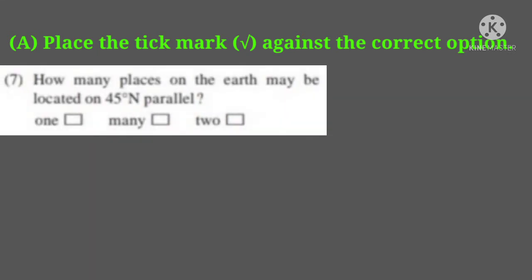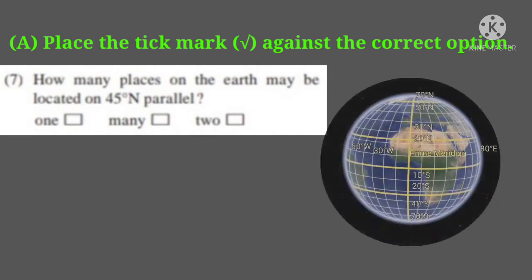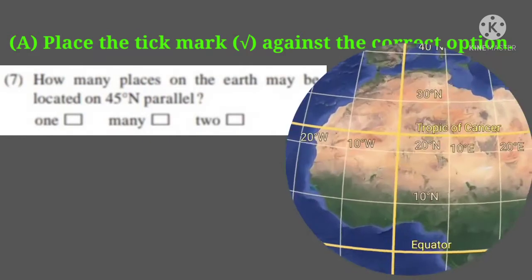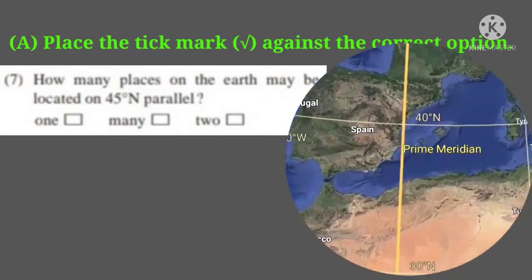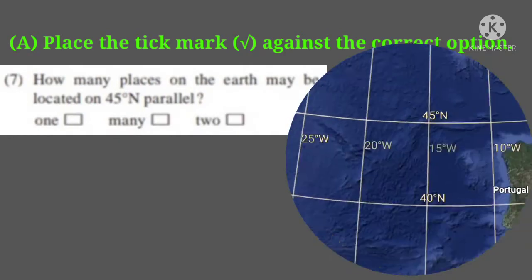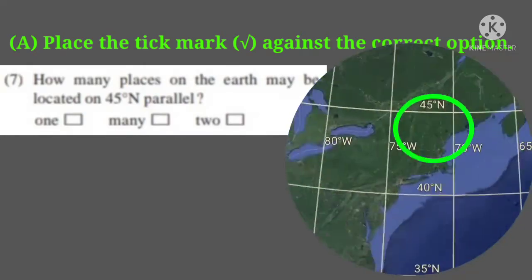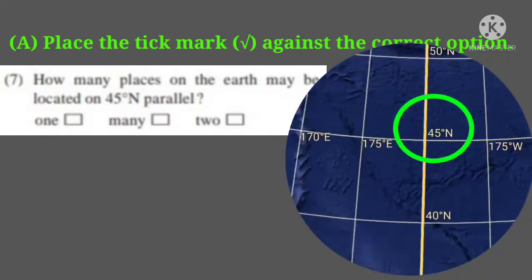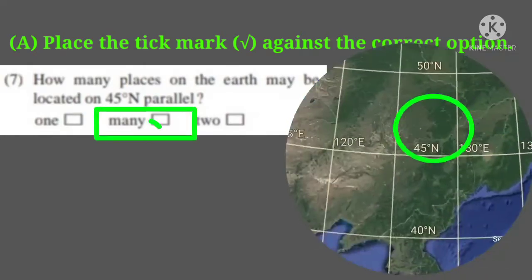Seventh one: how many places on the earth may be located on the 45 degree north parallel? The options are 1, many, and 2. The correct answer is many.